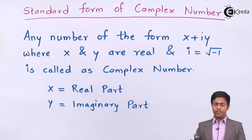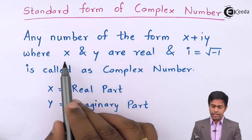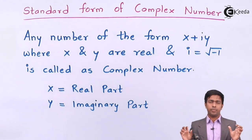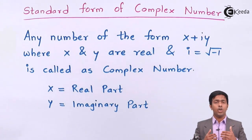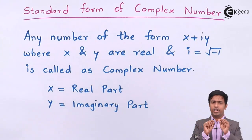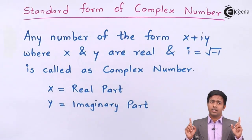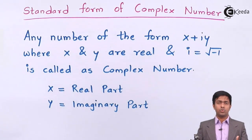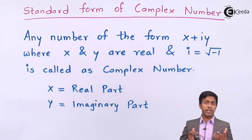Any number of the form x plus iy, where x and y are real — meaning if you take x and y separately, they are both real numbers. The value of x and y can be anything from negative infinity to positive infinity. Whatever number you can represent on the number line, those are real numbers. So x and y can carry any value: a negative value, a negative fraction, a positive fraction, or a positive integer.